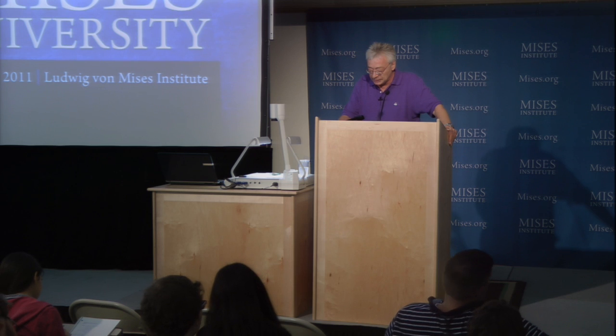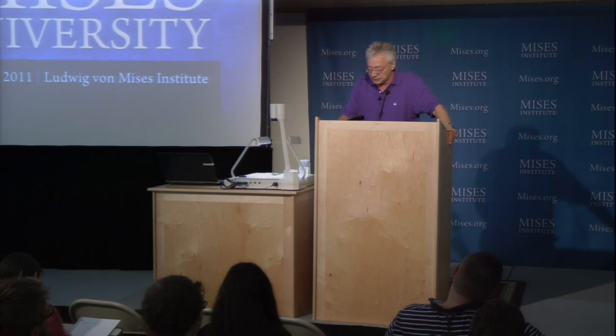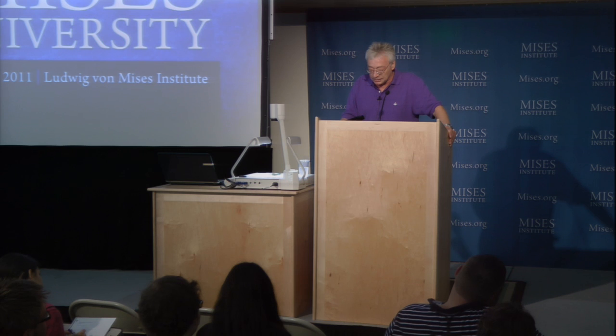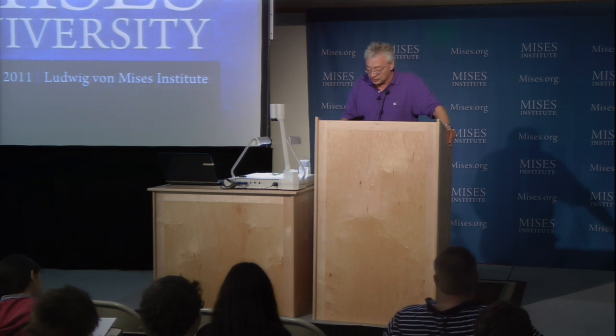Richard von Mises was a professor of mathematics at the University of Strasbourg from 1909 to 1919. Strasbourg at that time was part of Germany and was then lost to France after World War I, becoming a French city, though still German in character. He had to leave Strasbourg when it became French, and then in 1921 he was appointed professor of mathematics and director of the Institute of Applied Mathematics at the University of Berlin, which was at that time probably the world's foremost university.